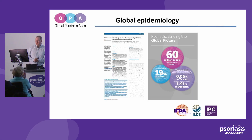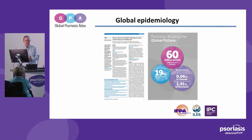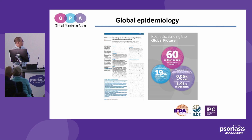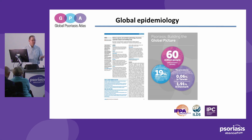One of the big exercises we undertake every three years or so within the Global Psoriasis Atlas is looking at the global literature on the epidemiology of psoriasis. This paper was published in the BMJ in 2020 and was our latest iteration of that. It's a really important piece for us because the data we generated from it really underpins the estimates we present in the Global Psoriasis Atlas. A key headline message was that we're able to more accurately describe at a global level how many people are affected by psoriasis.